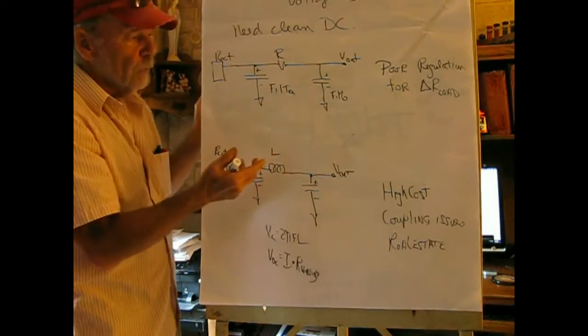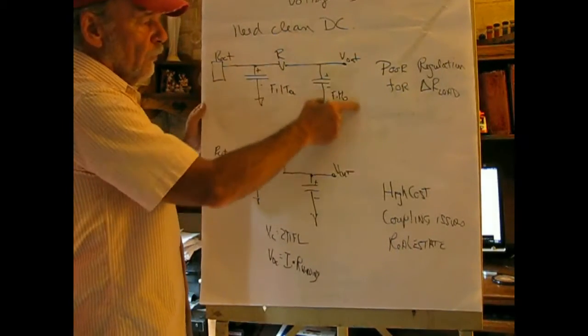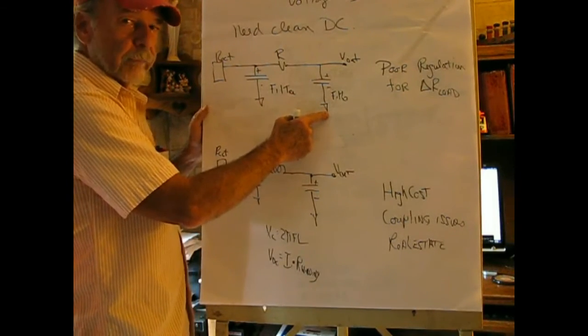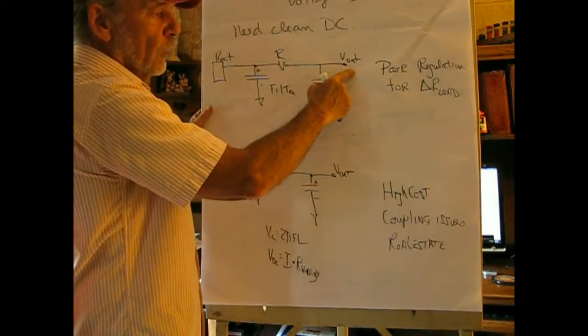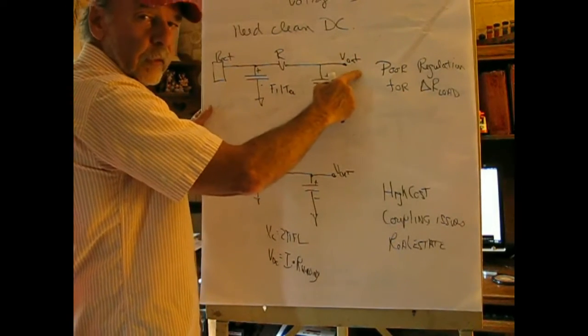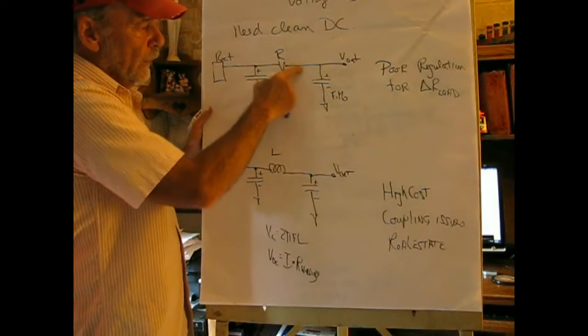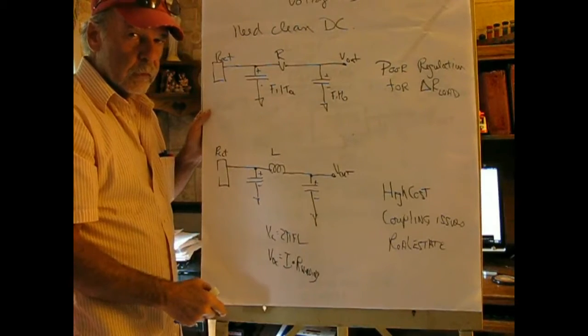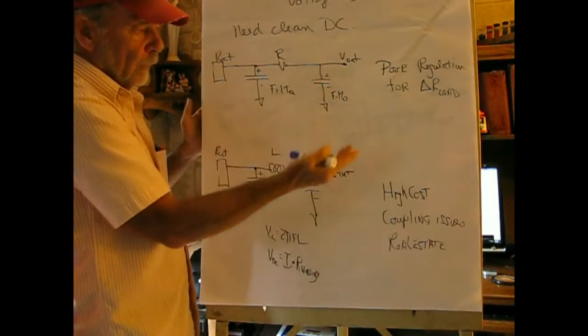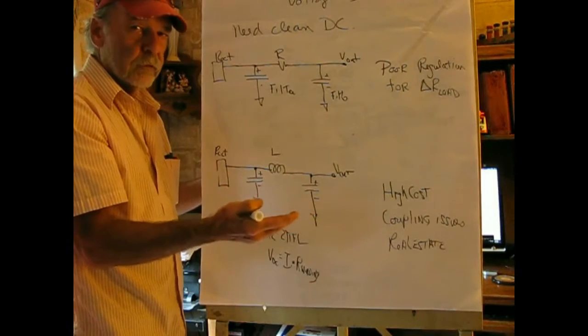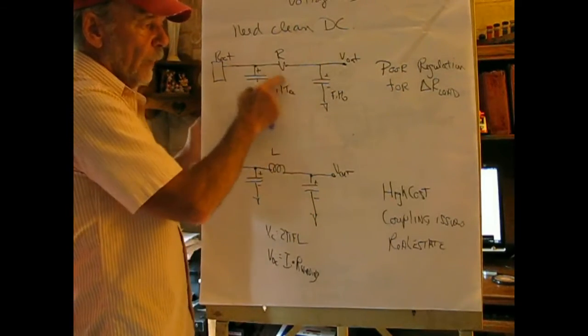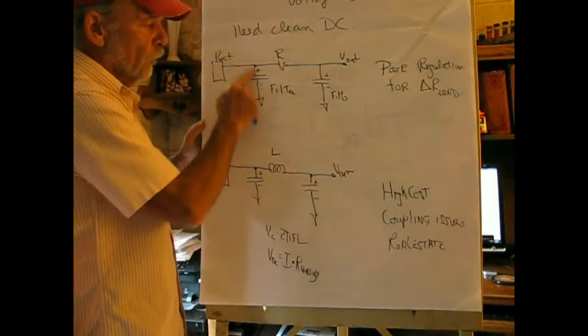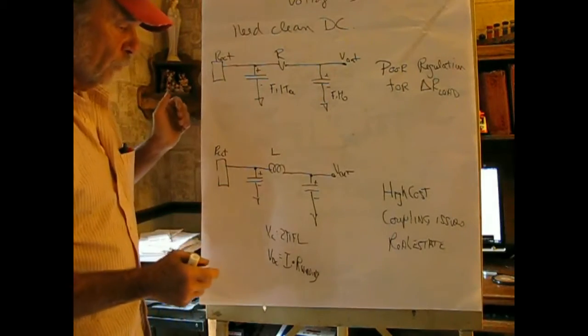But if we needed clean DC and we didn't want to use a regulator, we could add a second RC filter here, which would clean things up kind of nicely. Now the problem with that is if we have a large delta I out here, having to do with a fluctuating load, we get a delta V across this resistor, meaning that our load regulation here is terrible. So if we're feeding a microphone preamplifier, which is going to be more or less a constant current load, this is a fine way to clean things up. You can add another section of this if you need to, and this is called a PI filter section for obvious reasons.